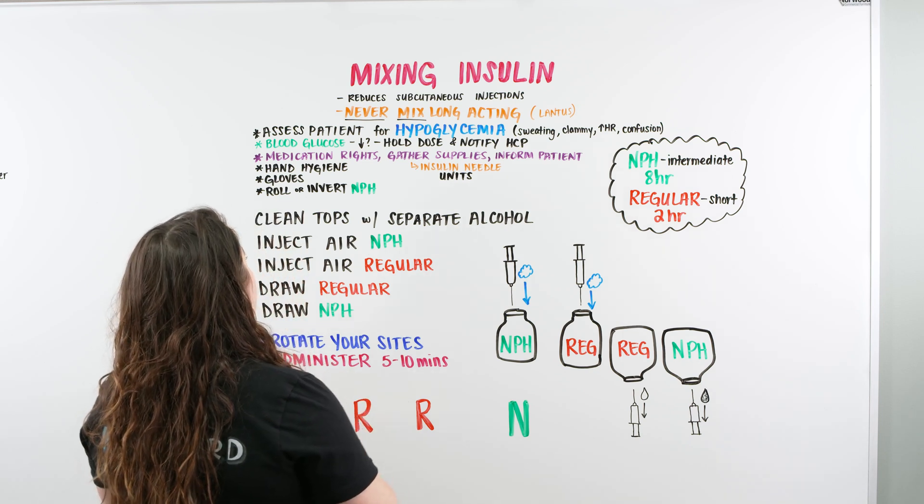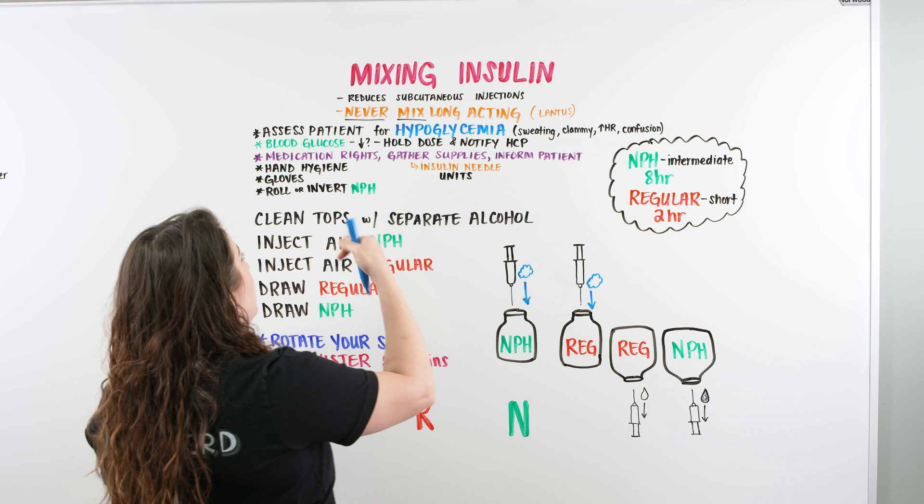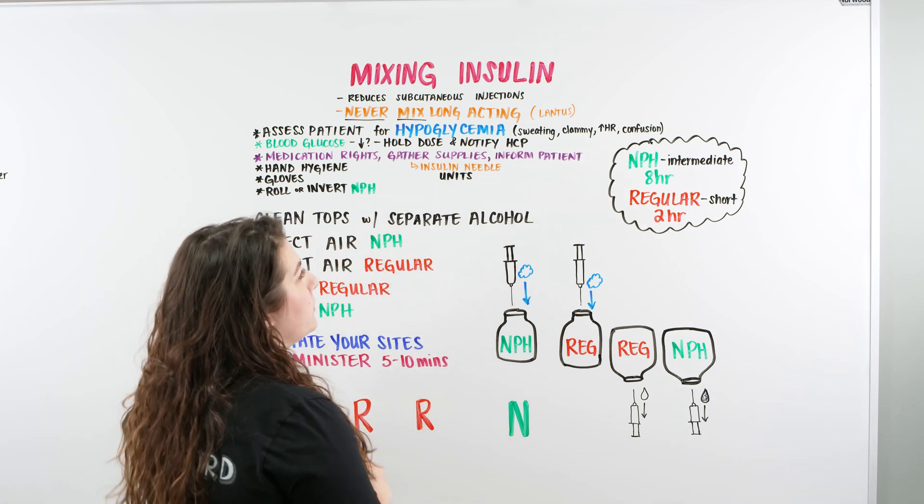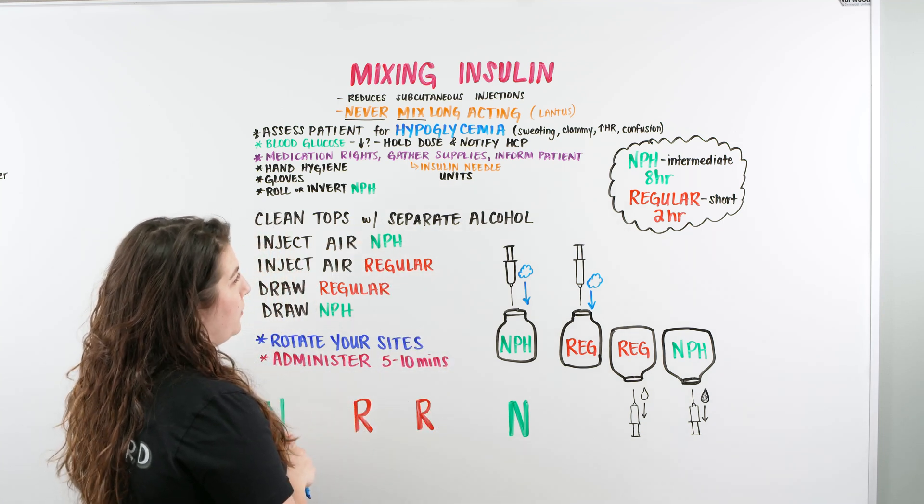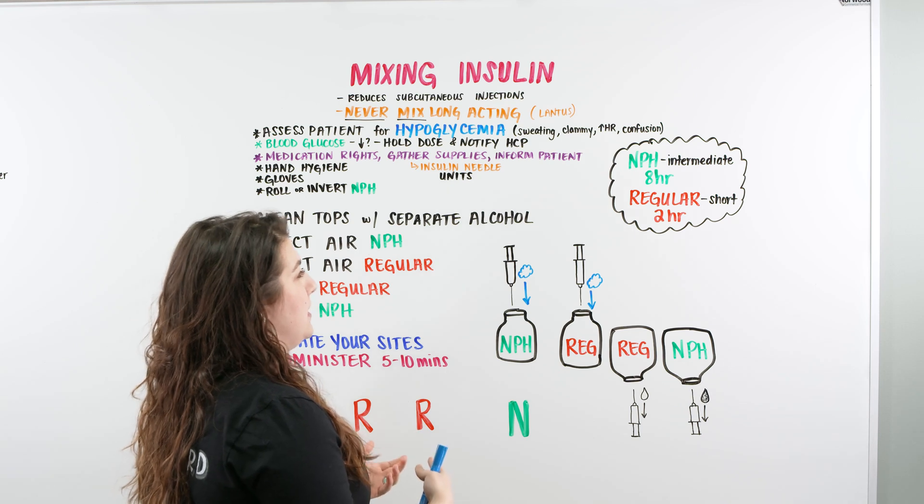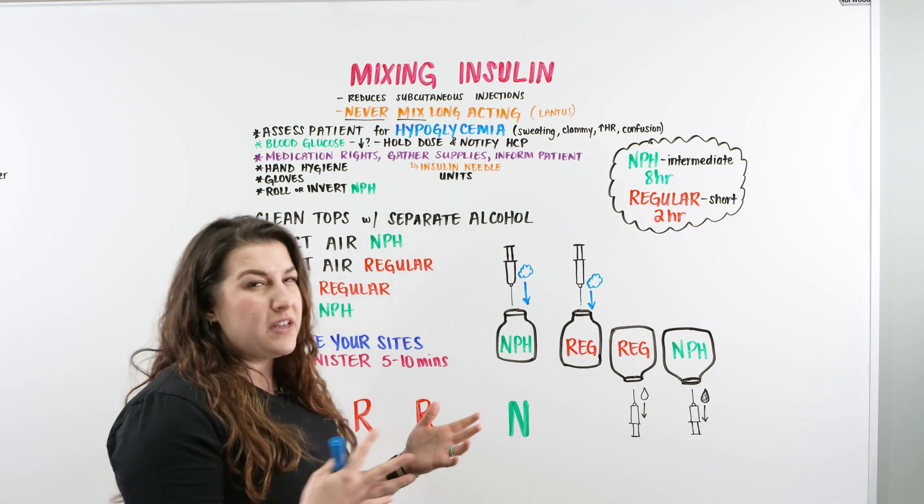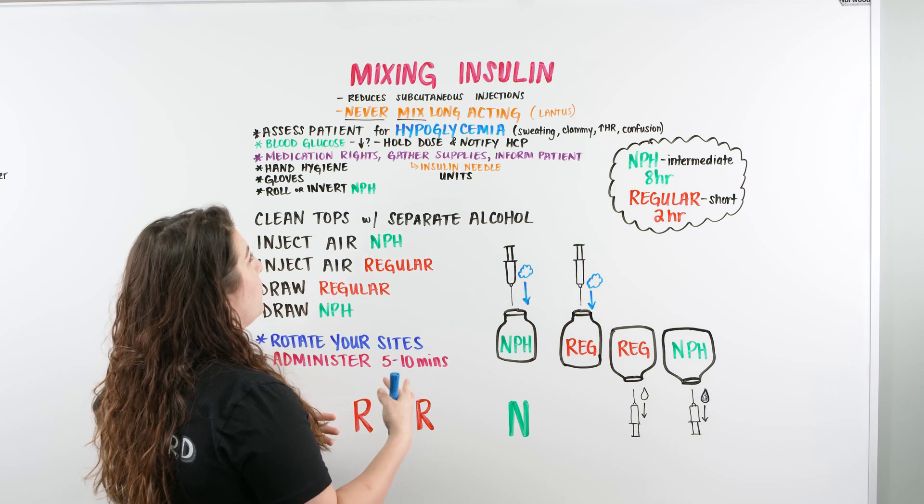And when you do check their blood glucose before giving insulin, if it's too low, you're going to hold the dose and notify the health care provider. When we do have patients in the hospital, there is a parameter per facility that we're looking at for our blood glucose.